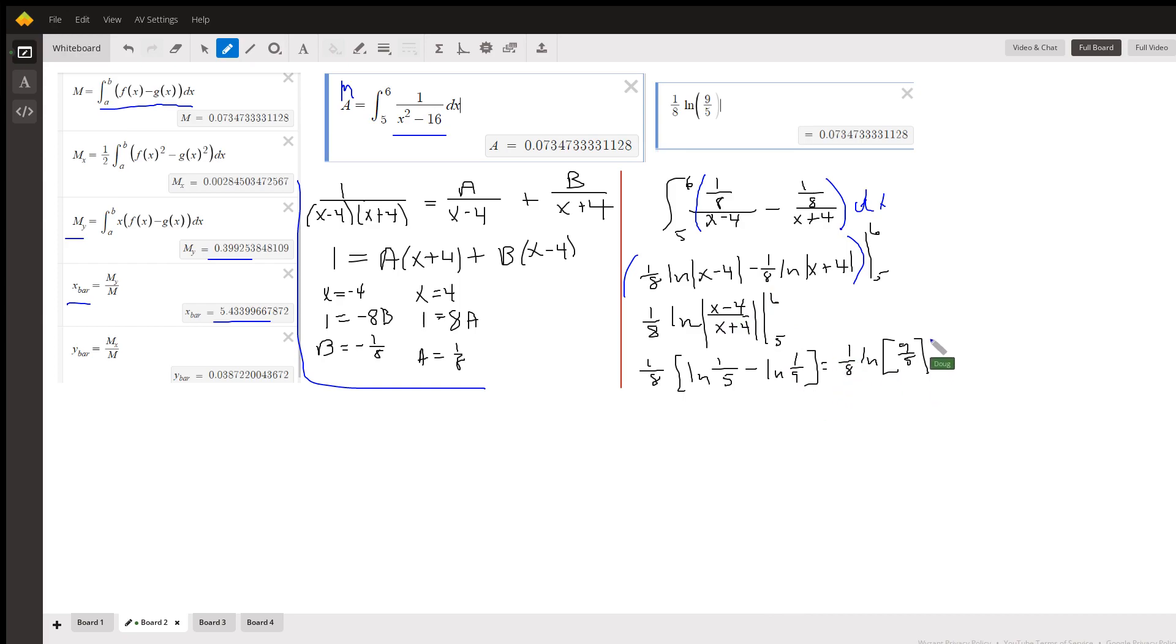Finally, substitute 6 for the x, minus substitute 5 for the x, and you get 1/8 of ln of 9/5, and there's the value right there, same thing that the calculator gives you.